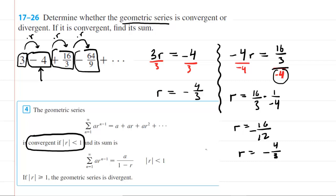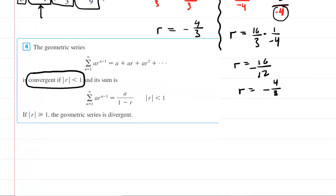So now that we know the common ratio is definitely negative 4 thirds, we can test for convergence by applying this rule right here. So now we just take the absolute value of negative 4 thirds, which of course is positive 4 thirds, and ask ourselves, is that less than 1? And in fact, it is not less than 1. It's actually greater than 1.